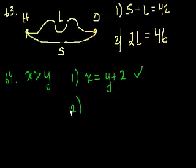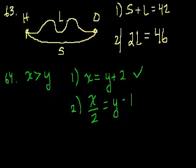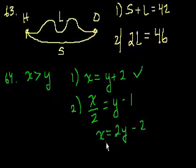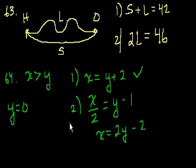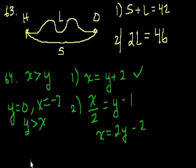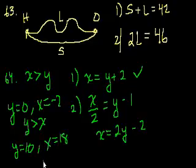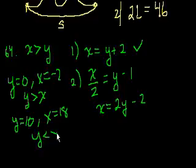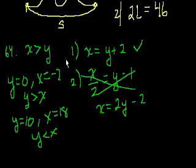Statement number two: x over 2 is equal to y minus 1, which means x equals 2y minus 2. We just have to find cases where the answer differs. When y is 0, x is minus 2, so y is greater than x. When y is 10, x is 18, so y is less than x. Statement number two tells us nothing about whether x is greater than y. So statement two is useless; statement one alone is sufficient.